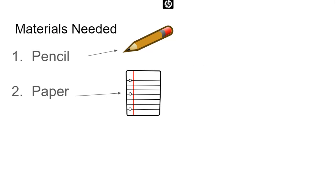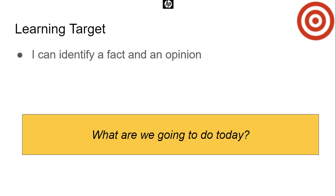What you're going to need today is a pencil and a piece of paper — and even if you don't have pencil and paper, you can still do this lesson. Our learning target: today I can identify a fact and an opinion. Miss Strong forgot her period — we need to make sure we have periods at the end of our sentences.